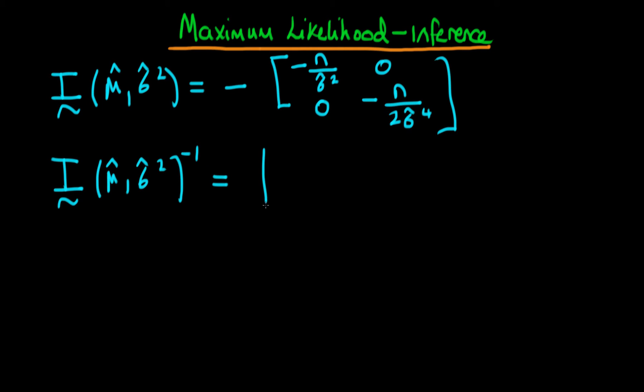This is just going to be equal to, if I take the minus inside and multiply each individual bit by minus 1 and then I just invert the diagonal terms, I'm going to be left with sigma hat squared over n, 0, 0, 2 sigma hat to the power of 4 divided through by n. So this is our inverse of the information matrix and it is this which defines the Cramer-Rao lower bound.